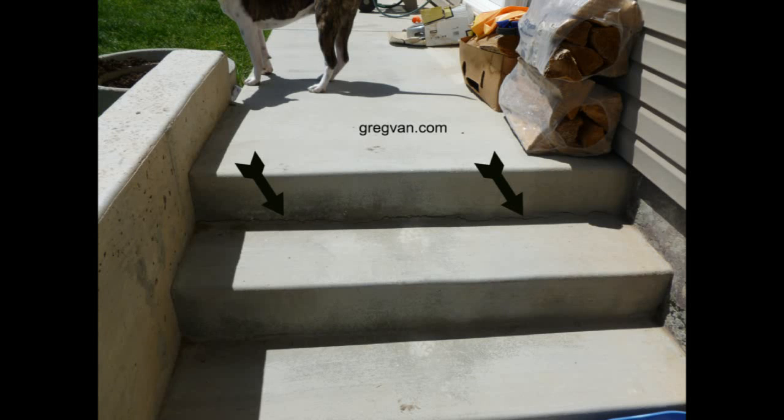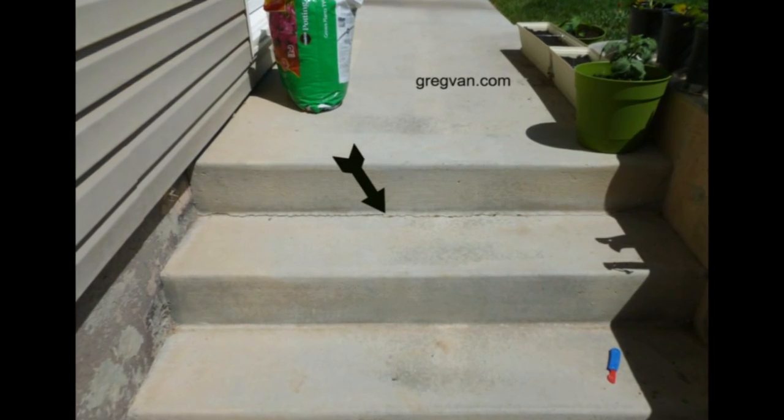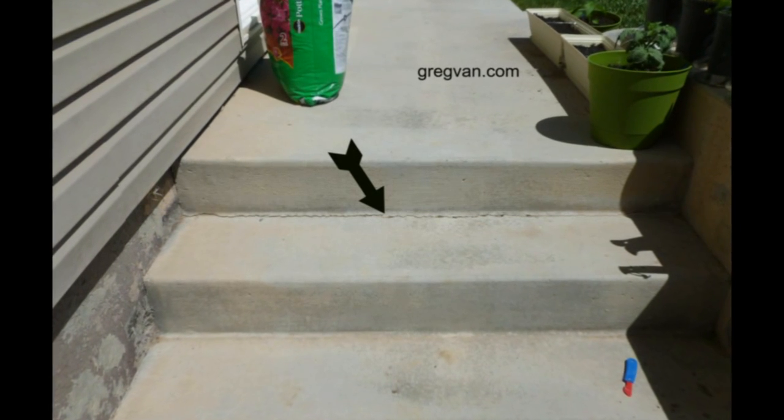What we're looking at here is a common problem with concrete stairways, and that of course is the infamous crack behind the back of the tread or step and the bottom of the riser. This is a common place for these areas to crack, and by the time you're done watching this video you will have a pretty good understanding why.